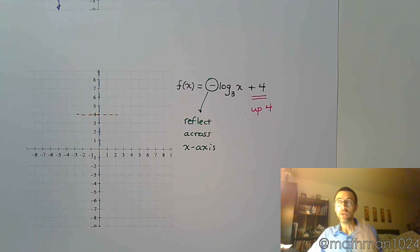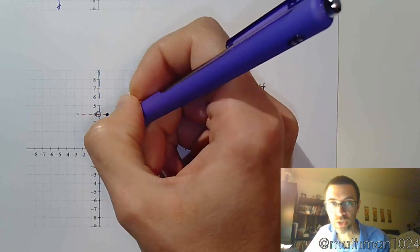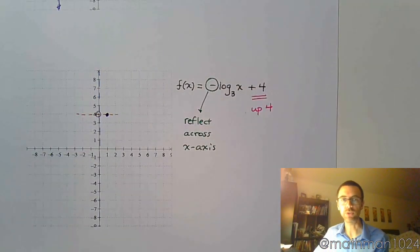And now I plot our points. Whether it's reflected or not, you still have your first key point here relative to this new origin at the ordered pair (1, 0). So start there.